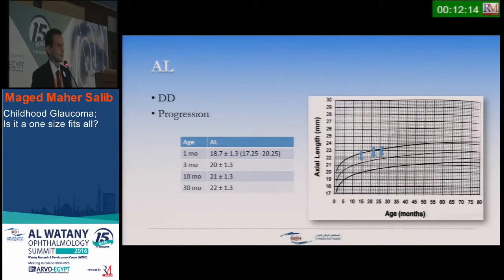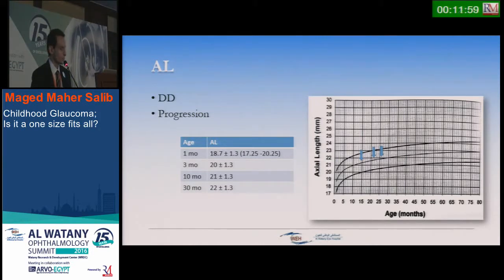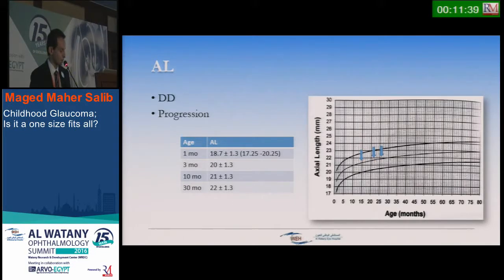The axial length of the eye is very important, especially in diagnosis and more so in monitoring progression. We can detect progression with axial length as with white-to-white examination. This is the normogram for axial length progression with age. An easy way to remember: at one month it is about 19 mm, at three months 20 mm, at ten months around 21 mm, and at 30 months about 22 mm. The best approach is not the absolute value but monitoring progression — whether it is parallel to the curve or outside the curve.